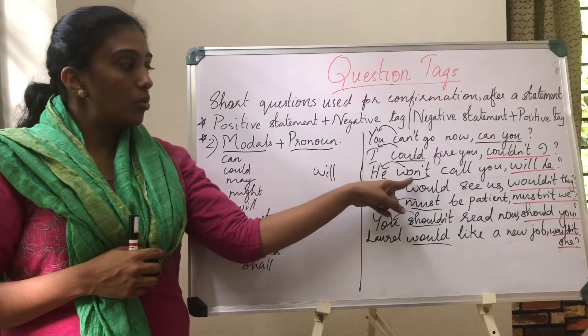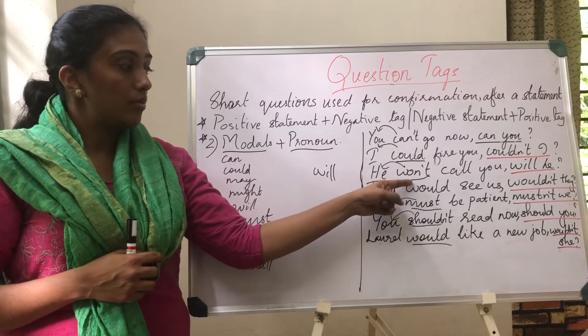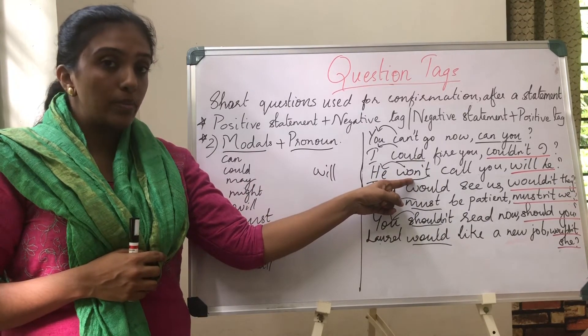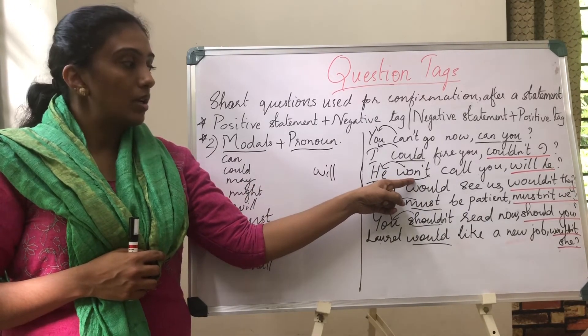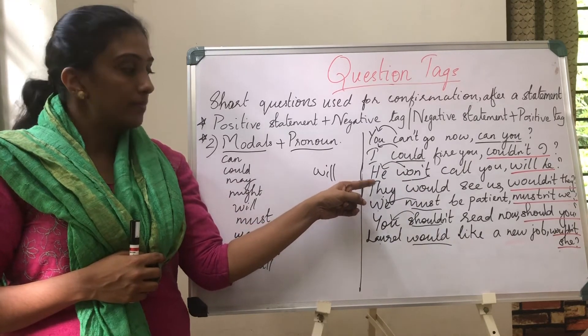'He won't call you.' Won't — the root will be 'will'. So the tag becomes: will he.